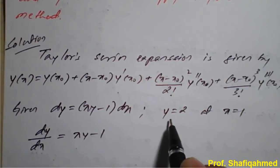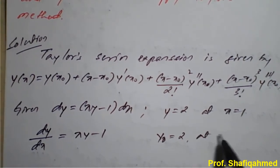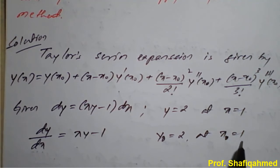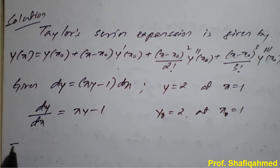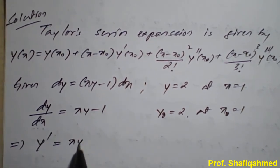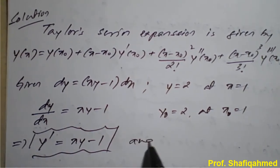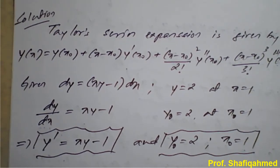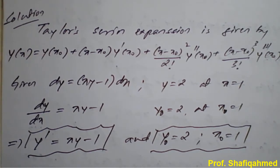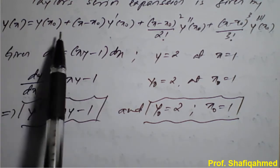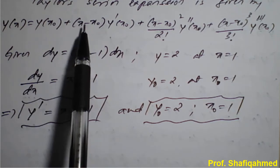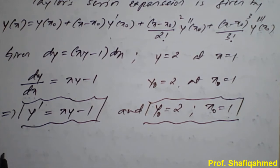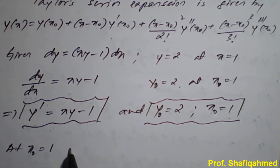Comparing with the standard form, the initial value y₀ = 2 and x₀ = 1. So y' = xy - 1 from the given equation. We know that y₀ = 2 and x₀ = 1. In the Taylor's series expansion, wherever x₀ appears we replace it with 1.